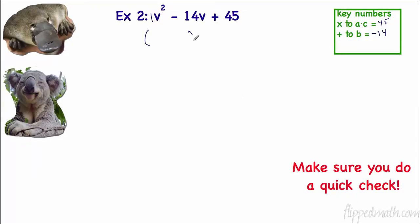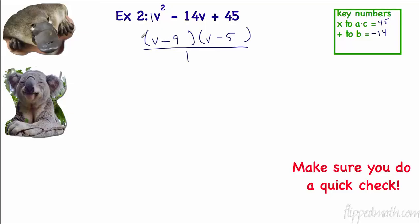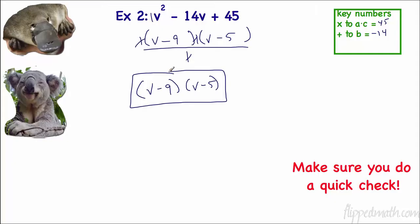So I put 1v in front of both binomials — v times v is v squared. My numbers are negative 9 and negative 5. There's no common factor other than 1, and dividing by 1 doesn't change anything, so the ones cancel and we're left with (v − 9)(v − 5). Quick check: v times v is v squared, negative 9 times negative 5 is positive 45, and the middle terms work out to negative 14v.